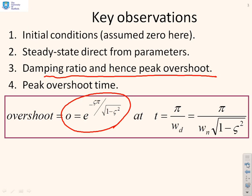However, in order to do that, you first need to compute the damping ratio ζ. So compute damping ratio. Once you've got that, compute peak overshoot using this formula.